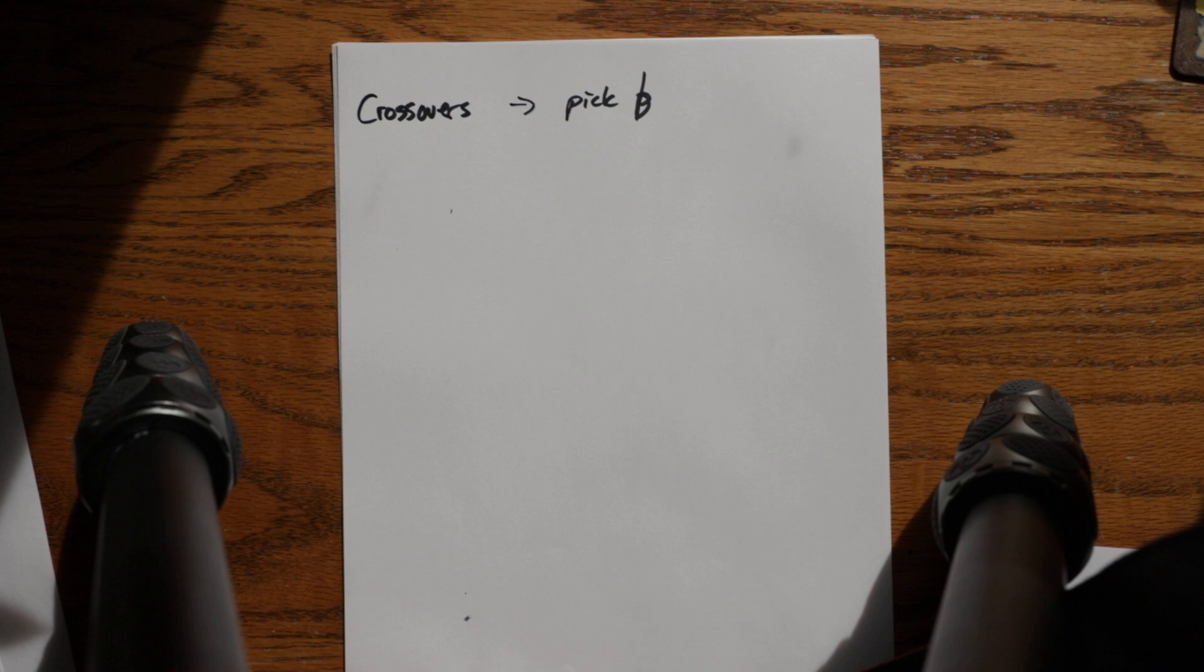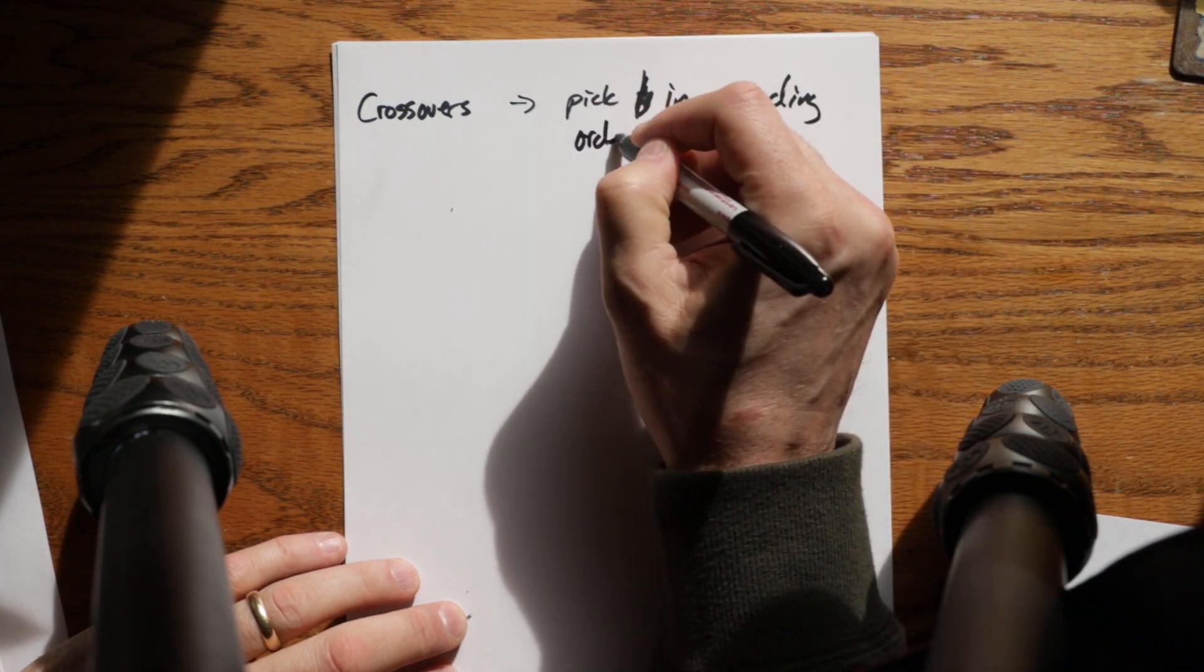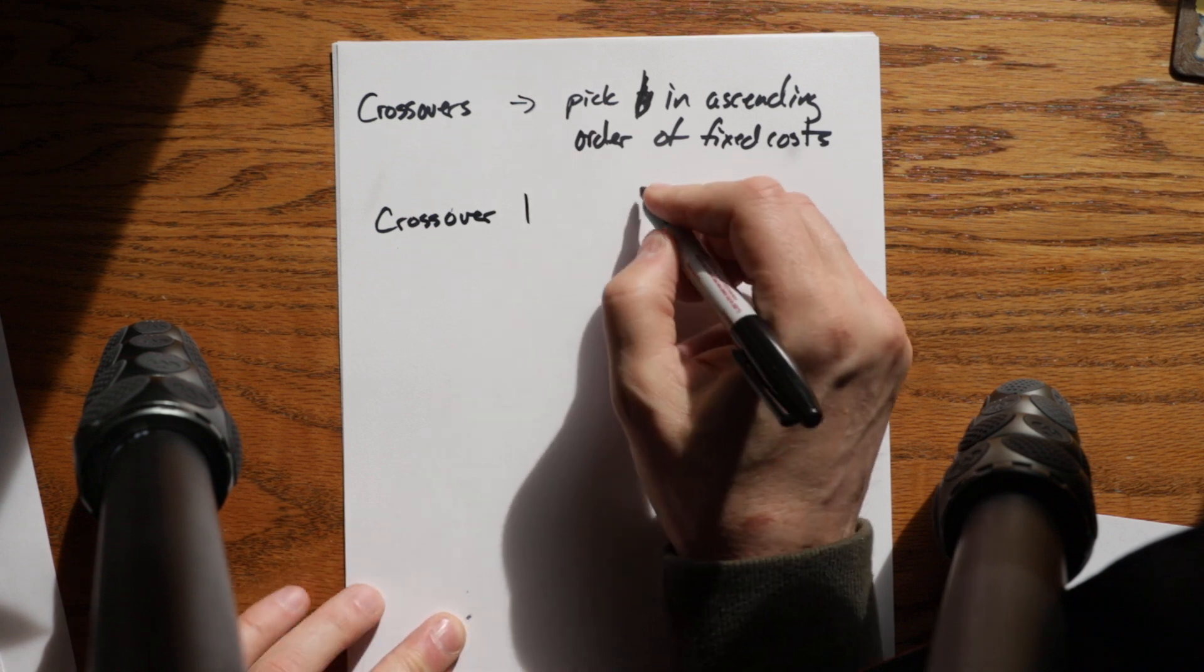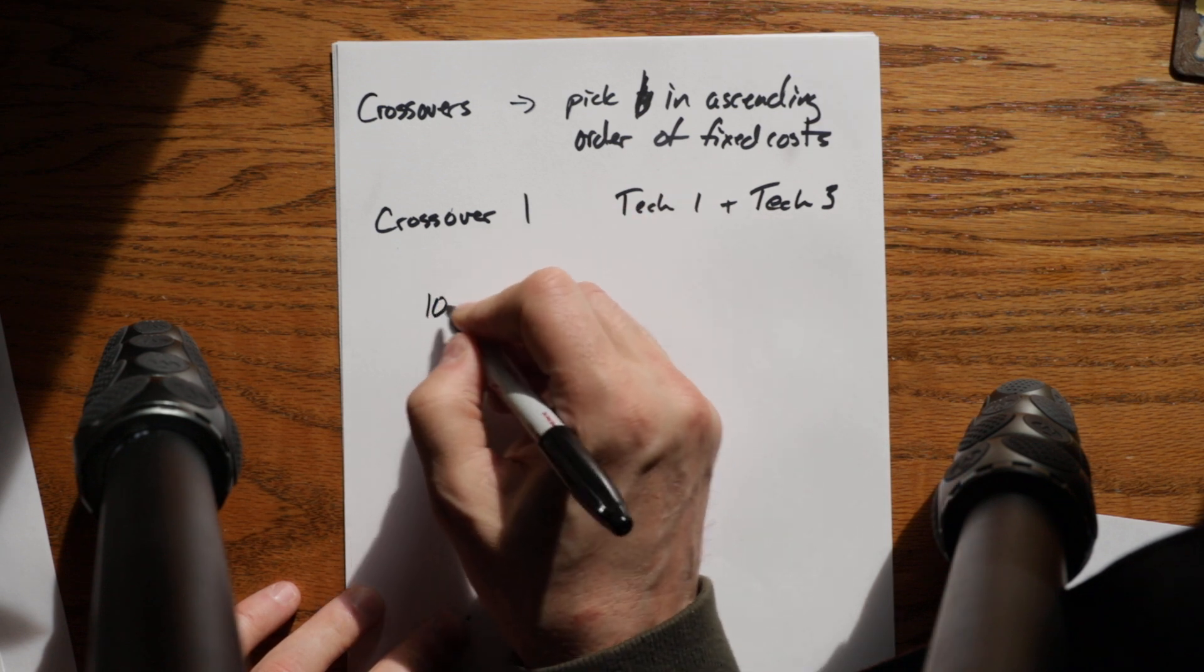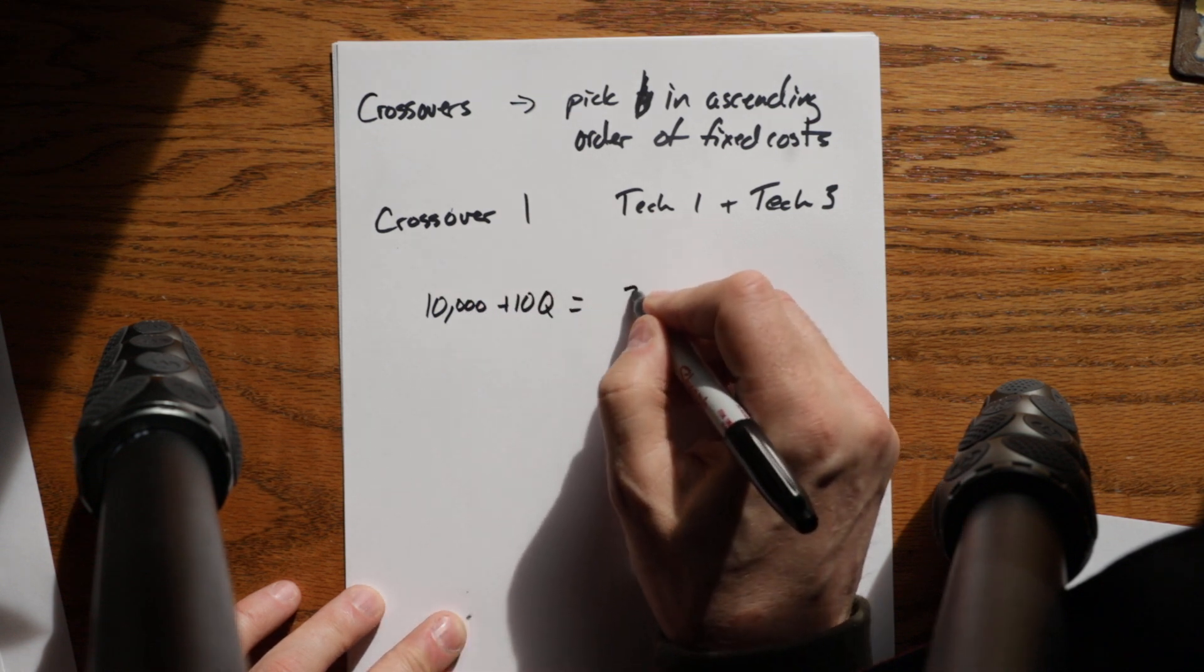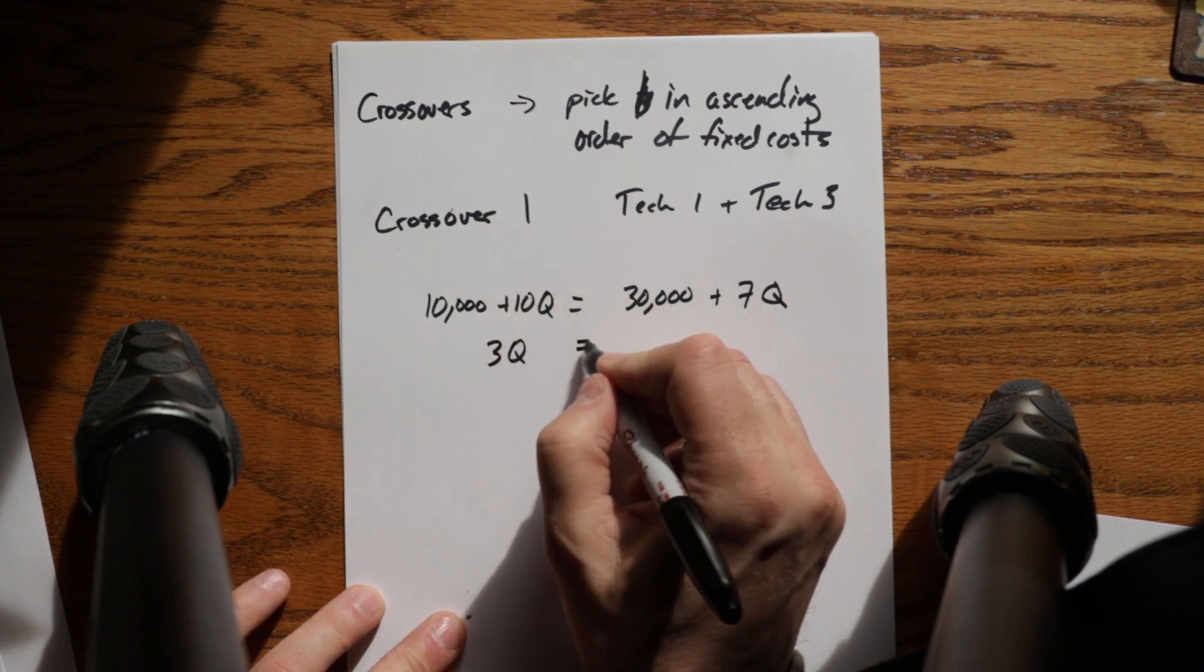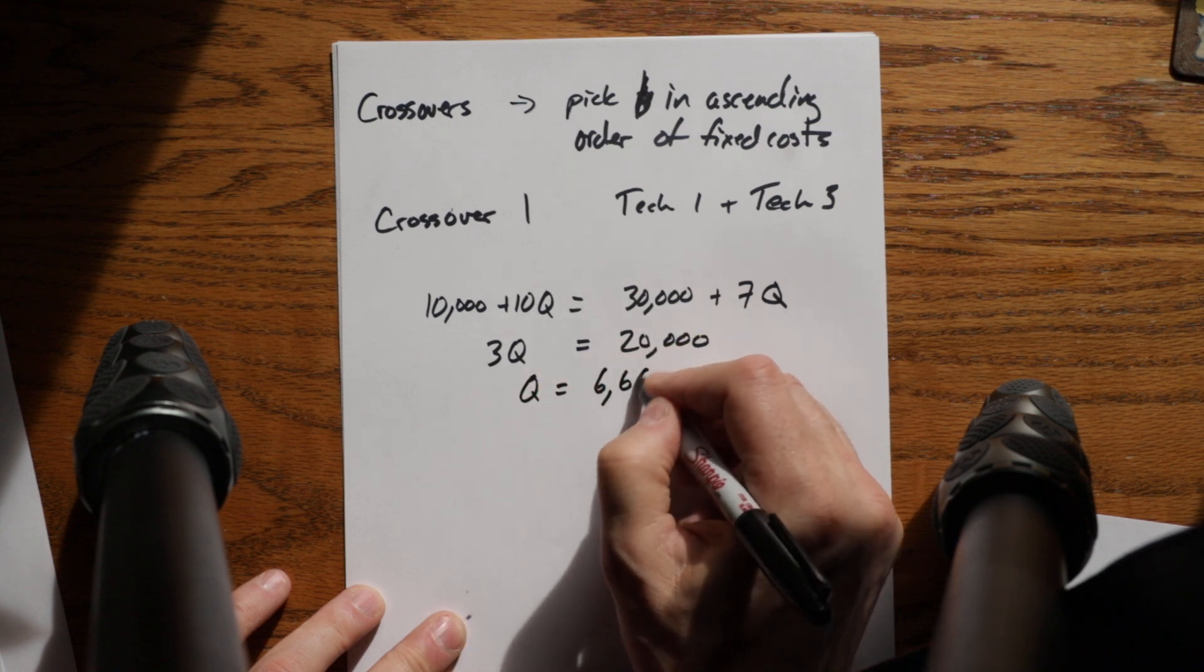So the first crossover. Crossover one is technology one and technology three. And then I just equate them to find the point where their costs are the same. So $10,000 plus $10Q equals $30,000 plus $7Q. So $3Q equals $20,000. Q equals 6,667.